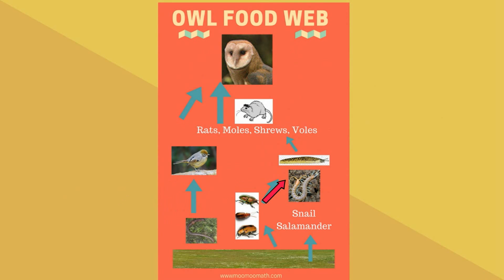Now it's time for the slug, salamander, centipede, and snail to eat. Notice that they are going to eat bugs occasionally. They are also going to eat grass and other producers, which are represented by the green grass.